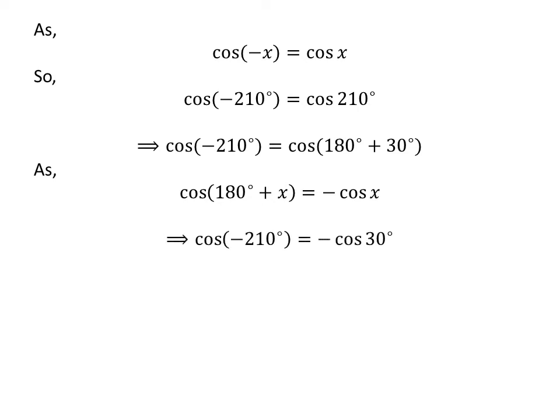Let us apply the above identity for cosine of 180 degrees plus 30 degrees. Here, x is 30 degrees. So, cosine of minus 210 degrees is equal to minus cosine of 30 degrees.